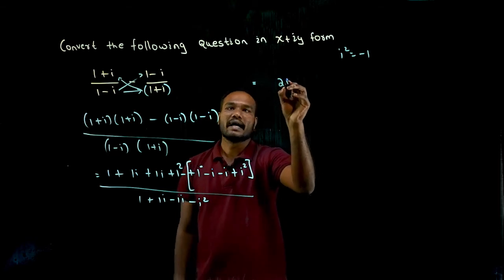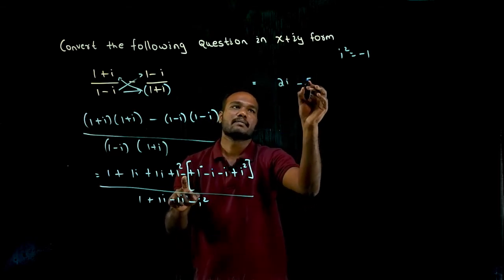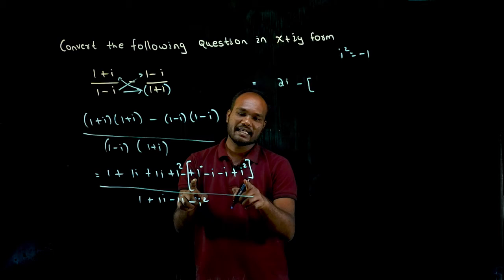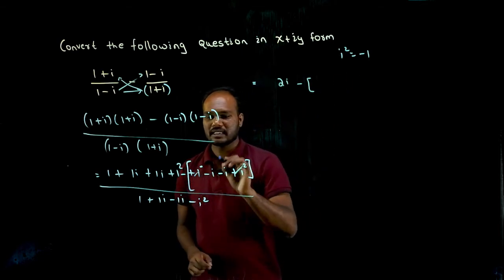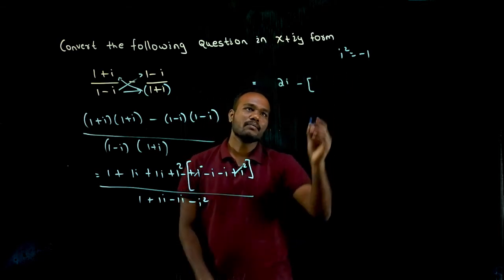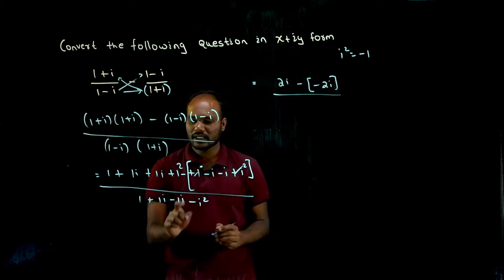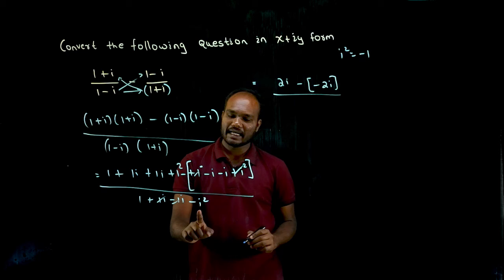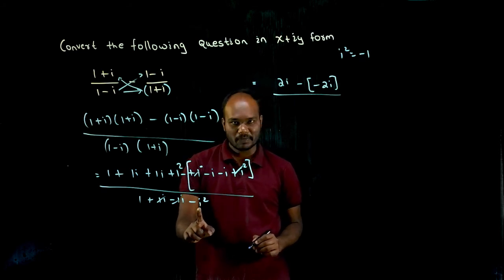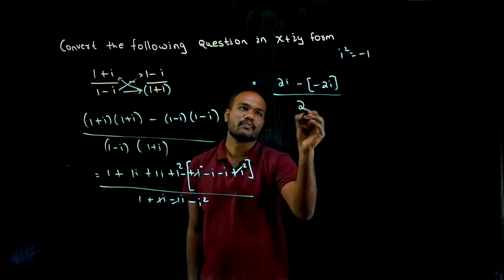And there is a minus, let's take minus. Again 1, i square value is minus 1, this and this get cancelled. So minus i minus i, minus 2i in the denominator. 1i, 1i again get cancelled, so 1, i square value is minus 1, minus into minus is plus, 1 plus 1 is 2, right?